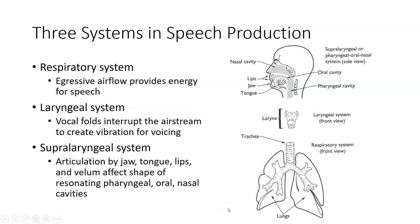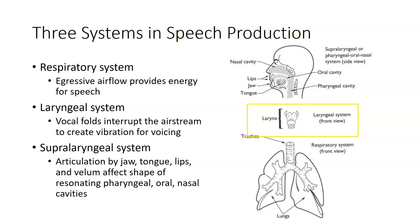The anatomy relevant for phonetics includes three systems used in speech production. The respiratory system provides an egressive or outgoing airflow that gives us the energy for speech. The laryngeal system uses the vocal folds to interrupt the airstream to create vibration for voiced sounds in speech.